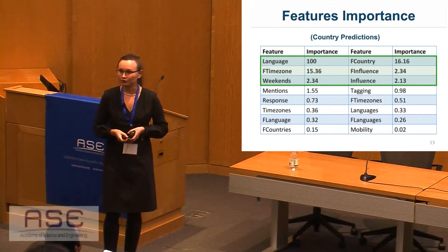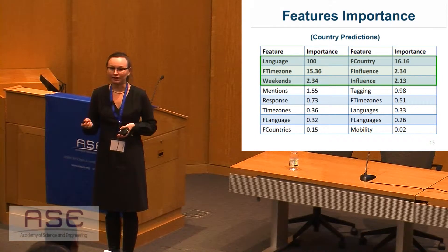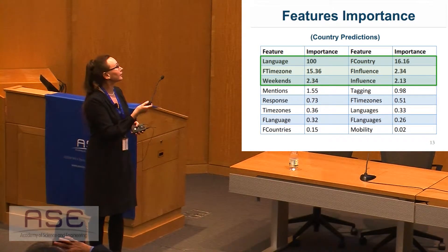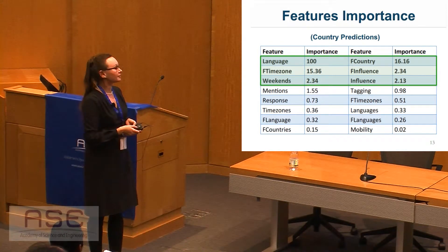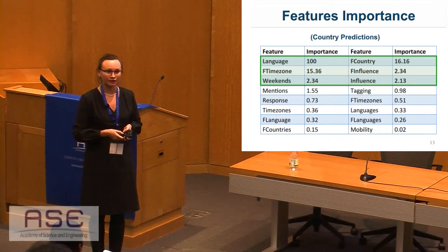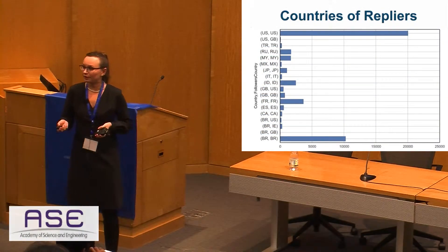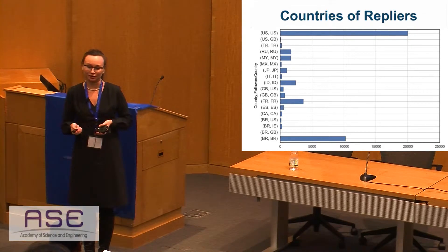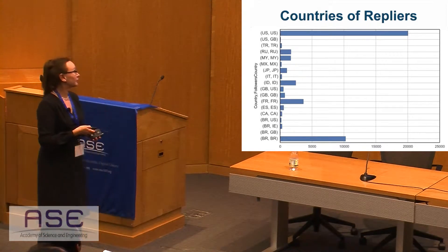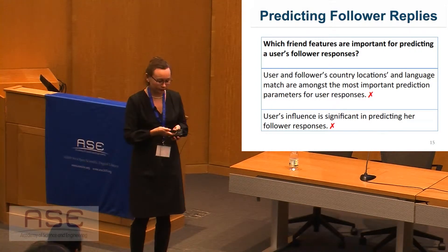We then moved to looking into the relationship between how we can see the replies — what is important for getting user replies on Twitter. When we look into replies, most replies come from the same countries of origin as our initial users. We thought perhaps matching user countries and languages is important for getting user replies on Twitter. But as we found out in our experiments, this is not the case.